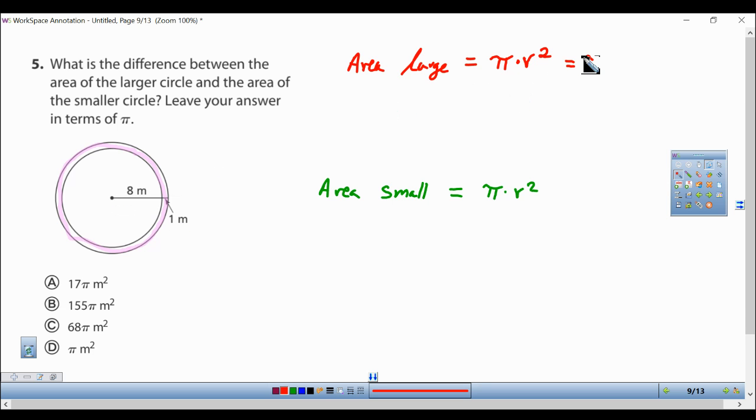So this is equal to pi times 9 squared, and that gives me pi times 9 squared is 9 times 9, which is 81. So the area of the large circle is 81 pi.